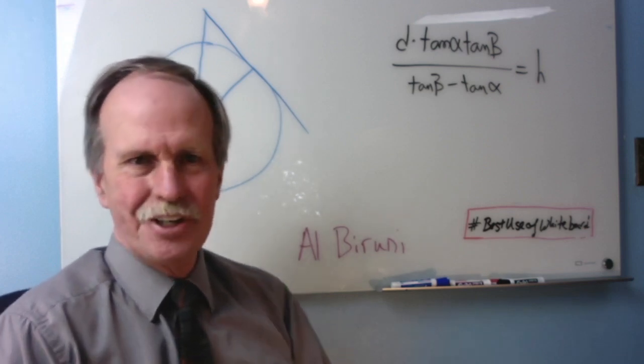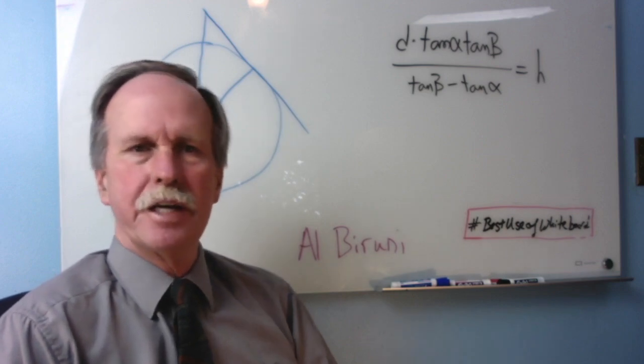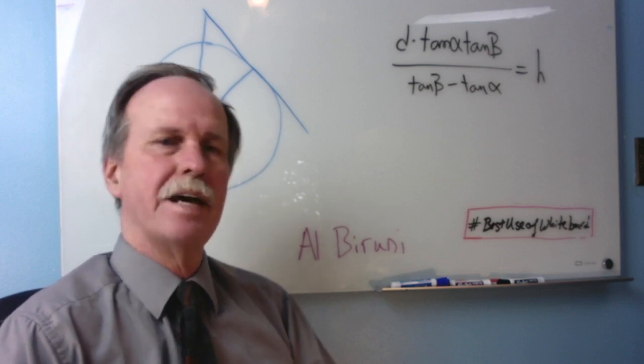Well, hi everyone and greetings from northern Michigan. This is Bob the Science Guy. We're continuing our trig on Tuesday, looking at the mathematics of Al-Biruni, who measured the radius of the Earth in about 1000 AD.